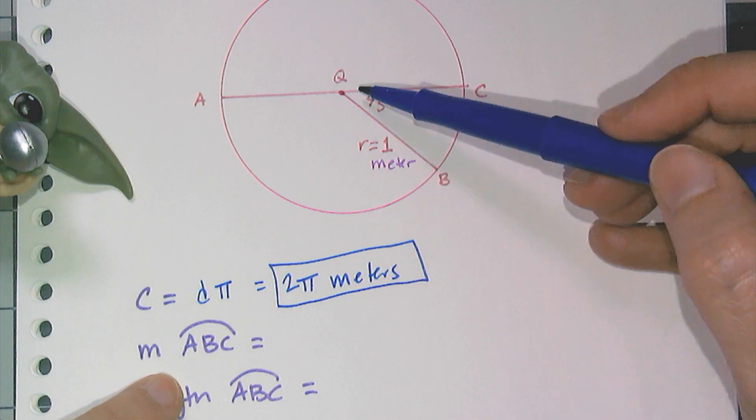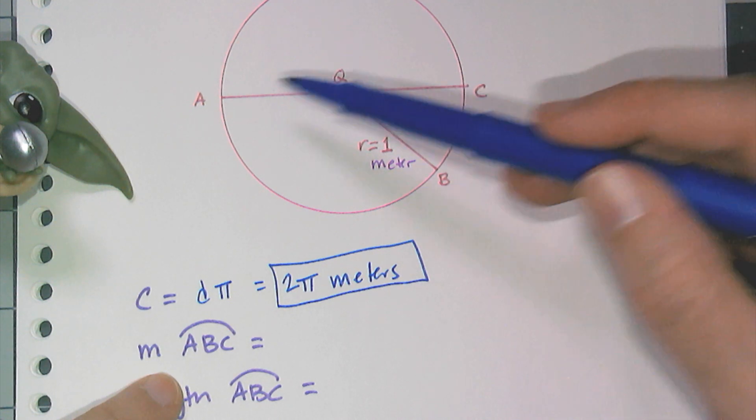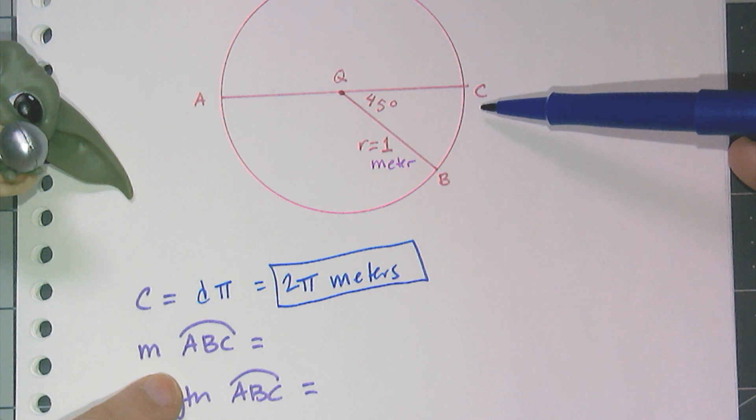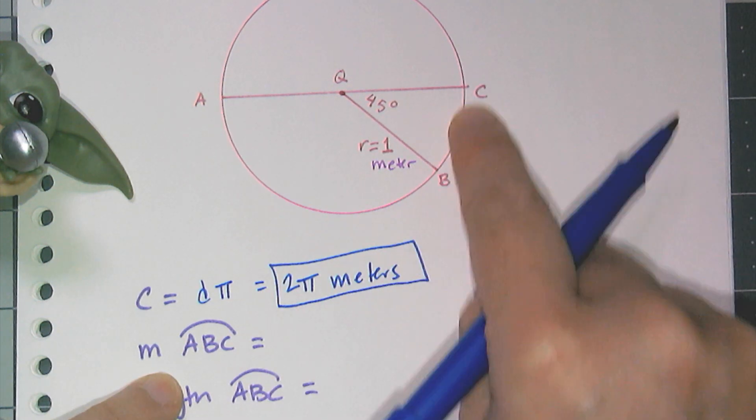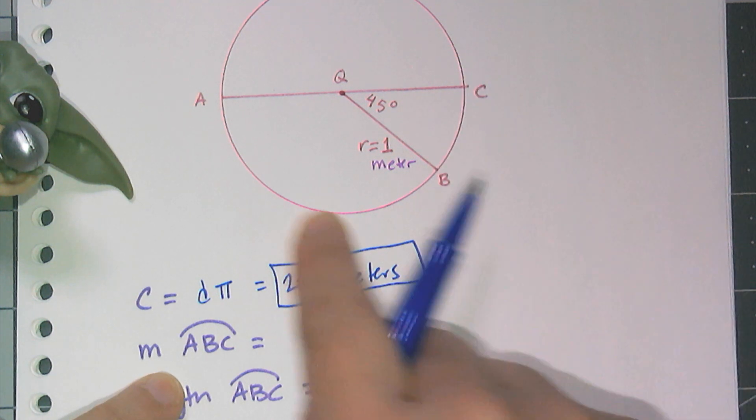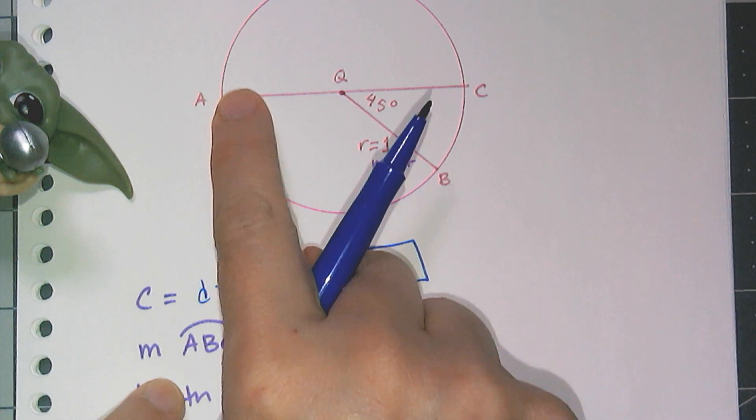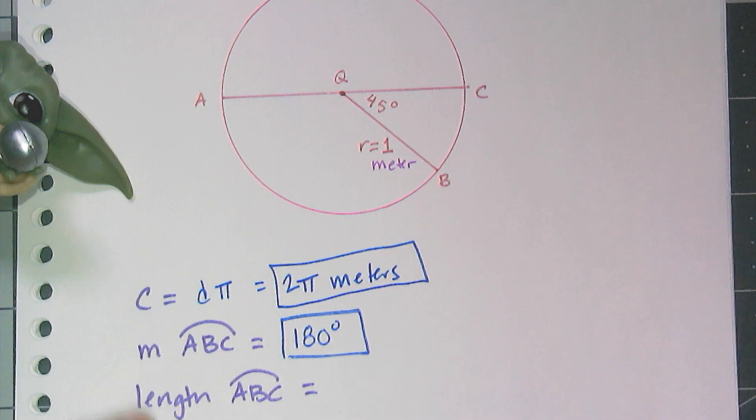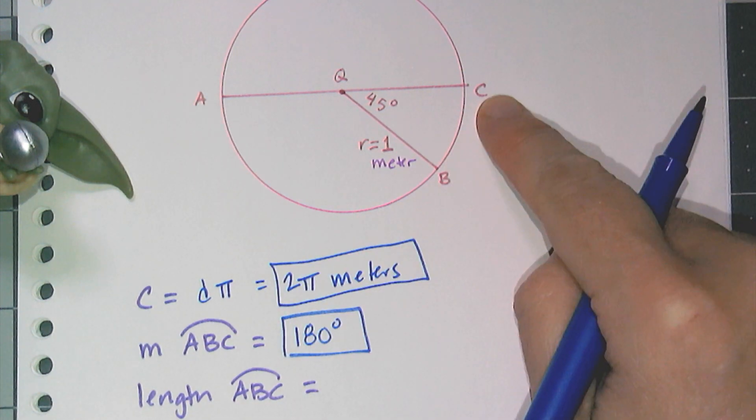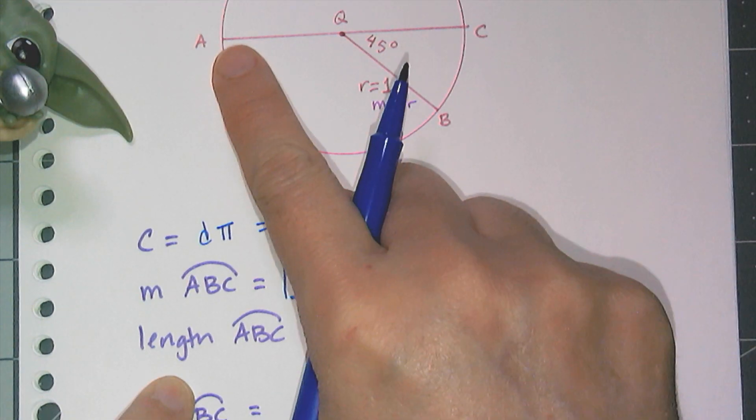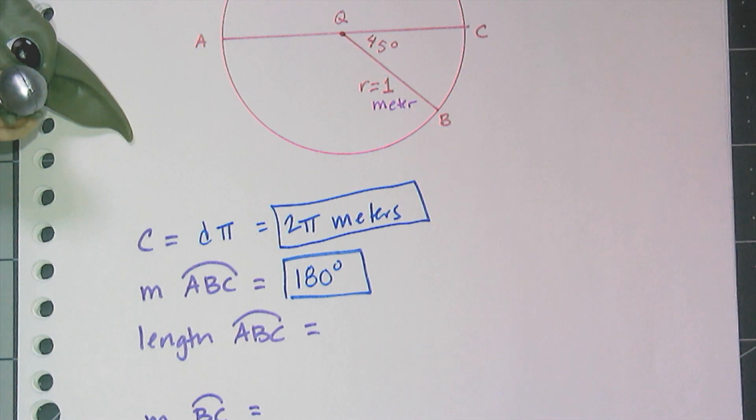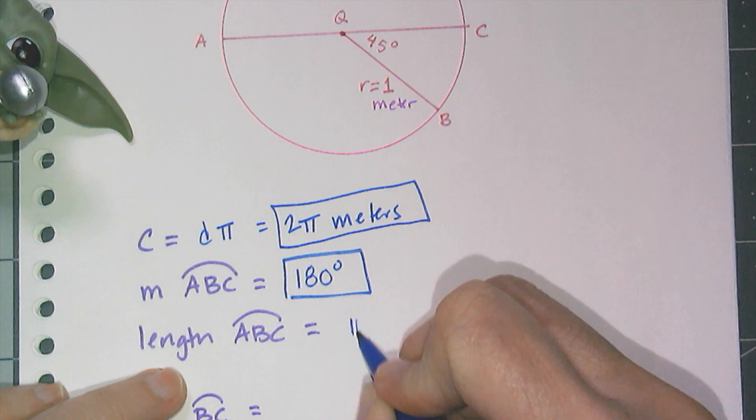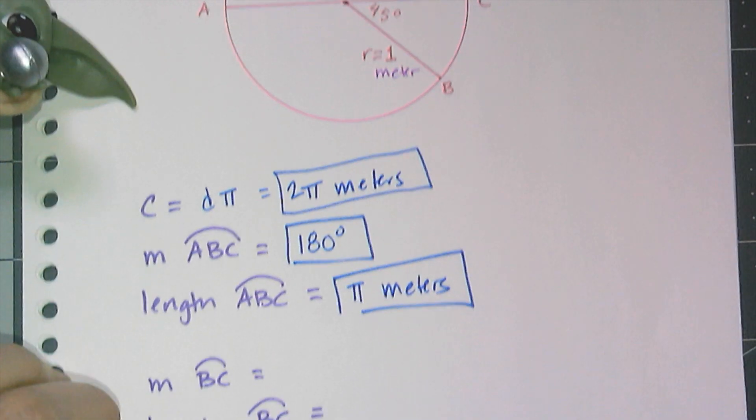Now I want to know the measure of arc ABC. Well, since AC goes through Q, I know AC is a diameter. Therefore arc ABC is a semicircle. I know the measure of this semicircle—this arc—the measure of arc ABC is the central angle used to create that arc, and that's 180 degrees. Now the length of ABC is quite simple. I want to know the length of that semicircle, and it's just half that circle, so it is just π meters. It's half that circle.